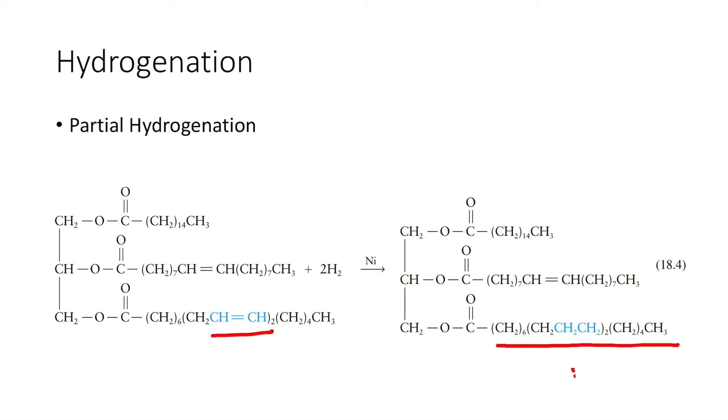Not both of these two fatty acids containing the double bond will be completely hydrogenated. Hydrogenation of vegetable oils produces a mixture of cis and trans fatty acids.